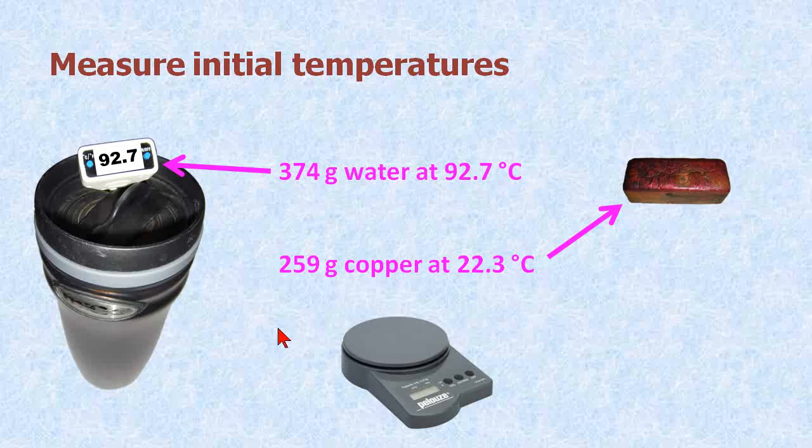First, we'll measure the initial temperatures. All I'm going to do is take this cup, put it on the scale, I'm going to pour some boiling water in it. First, I actually preheated it with water, so it was warm already. I'm going to pour some water into it. And then when I weigh it, I get 374 grams of water.